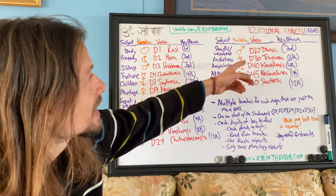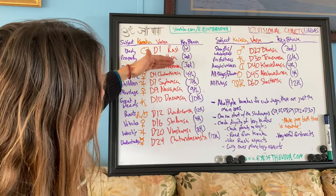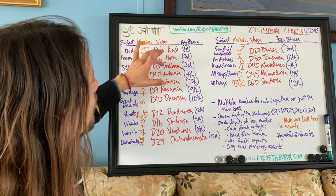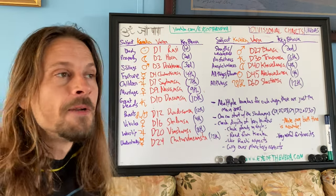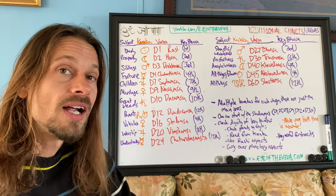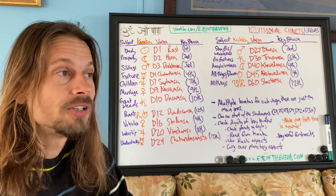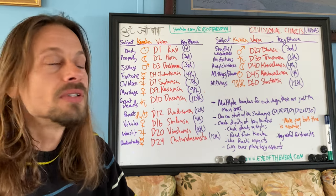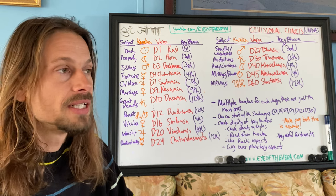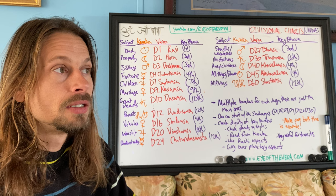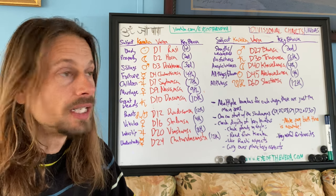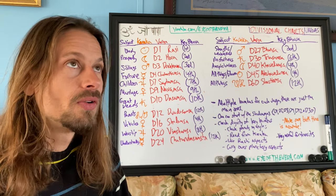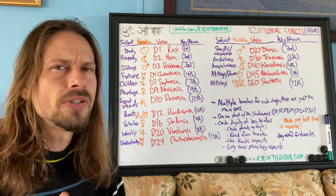Notice how names like Chaturthamsha, Saptamsha, Navamsha, Dashamsha, Dvadasamsha all end in '-amsha,' but Hora and Drekona are different. That's because Hora and Drekona are actually Greek words, not Sanskrit words. Drekona in particular never appears in any Sanskrit text outside of astrology. Similarly, Kendra — meaning an angle — comes from the Greek word 'Kendron,' and there are a few other Greek words brought into Vedic astrology.